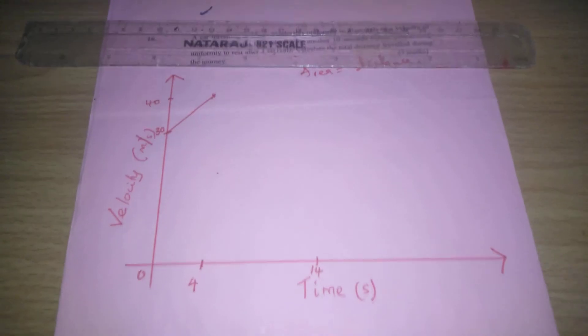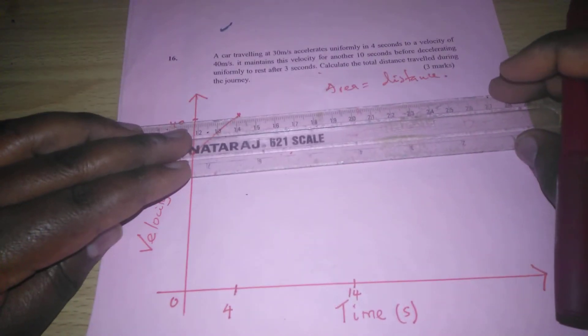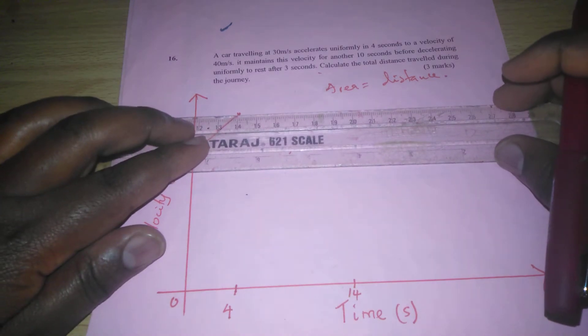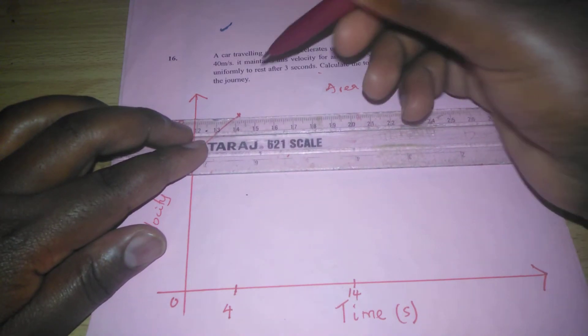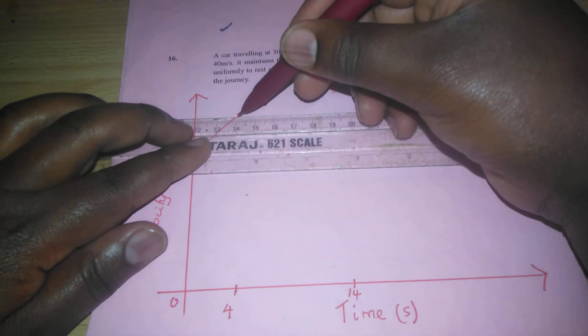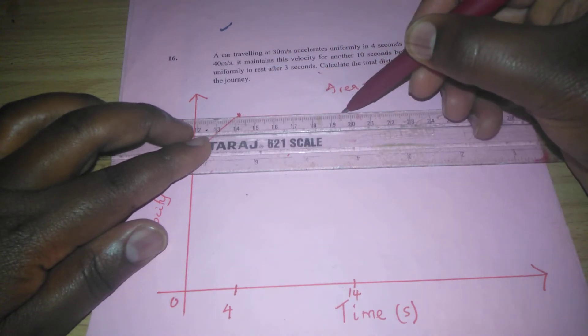From 14 seconds, the velocity is the same. It has to sustain a velocity of 40 meters per second. This one has to be uniform to show that the velocity is flat.